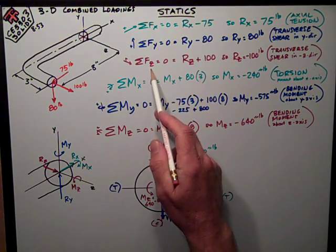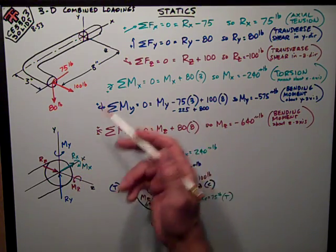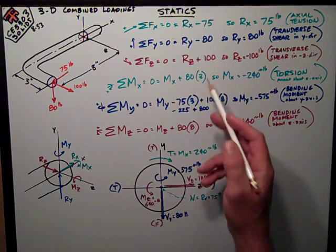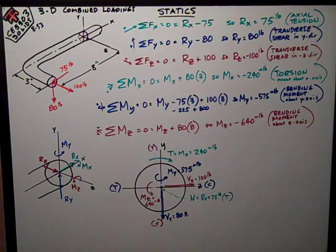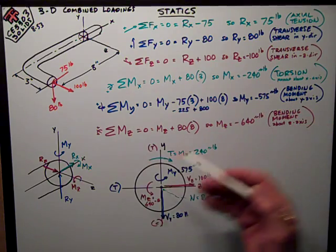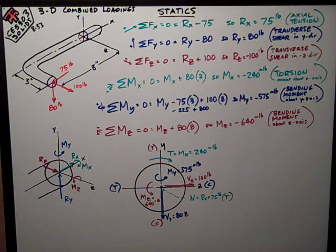Then I look at the sum of forces in the Z direction. The only Z force I have is this 100-pound force. I've assumed my positive RZ reaction, so RZ is 100 pounds negative. My internal reaction is that way on the backside of that face, that cut section. So that's a transverse shear in the Z direction, which is 90 degrees from where we're used to looking at it in beams and bending.